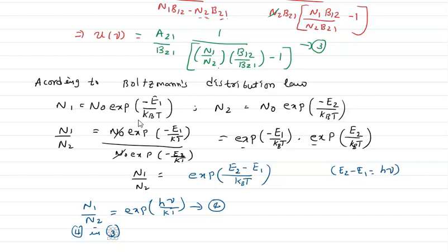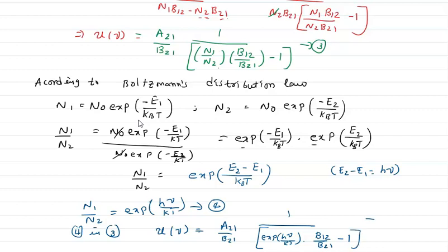Substituting the fourth equation into the third equation, we get: u(ν) = A21/B21 divided by [(B12/B21)·exp(hν/kT) − 1]. This is equation number 5. If this equation matches the known radiation law, the concept is complete.